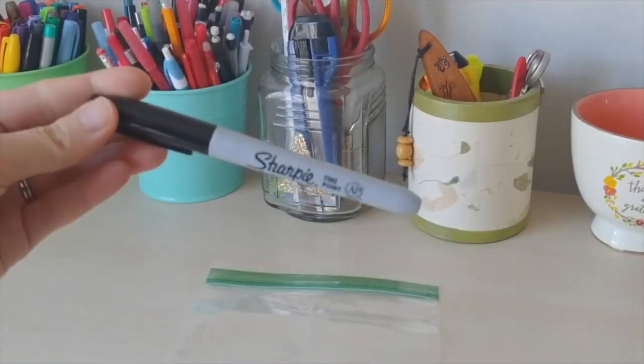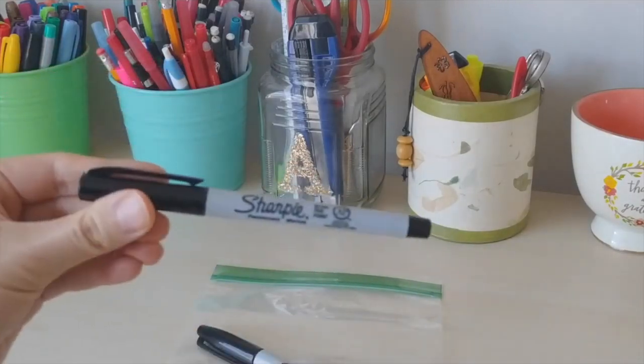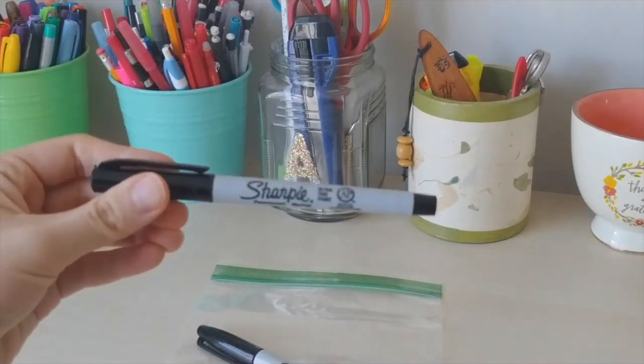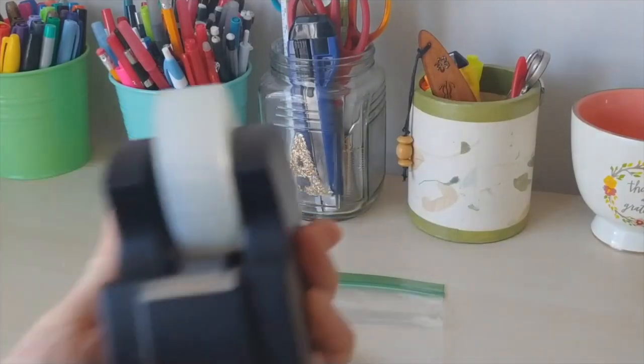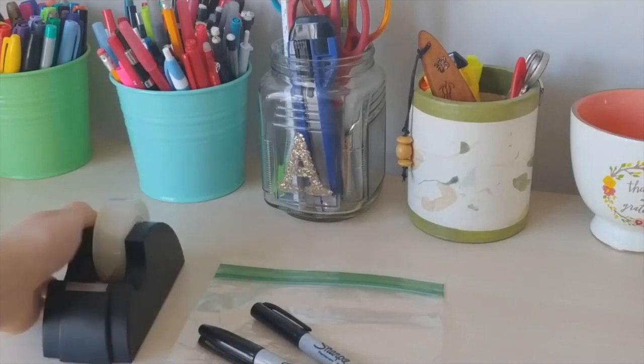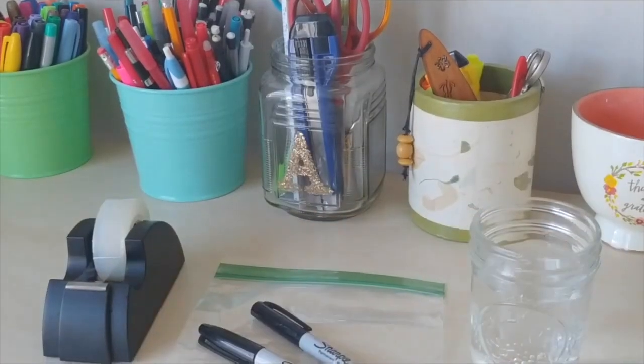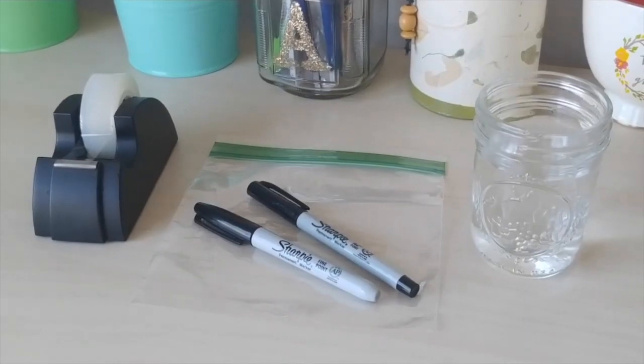A permanent marker to write with such as a sharpie, a fine point or thin sharpie is great too, tape, just a few pieces, and water. Now that we have our materials let's begin.